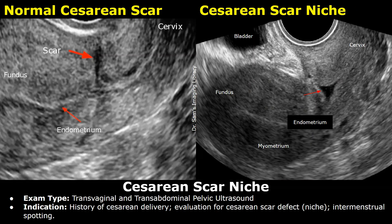This is a report regarding a case of cesarean scar niche, a complication of a C-section. The image on the left shows a normal scar for comparison, and the image on the right shows a cesarean scar niche. Indication: history of cesarean delivery, evaluation for cesarean scar defect or niche due to menstrual spotting.